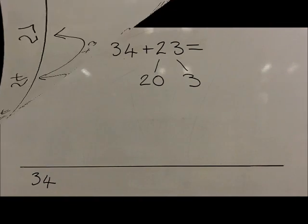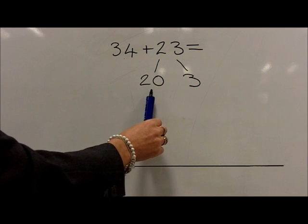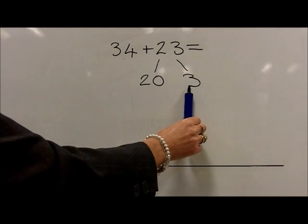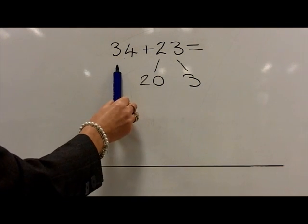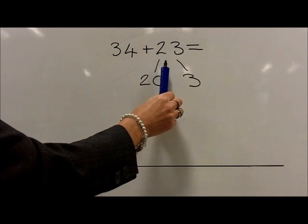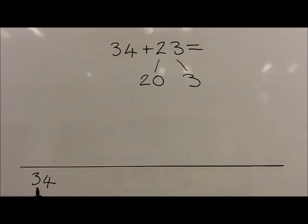This is followed by them adding tens in one jump and the units in one jump. So for this question, 34 plus 23, they still start at the number 34 on the left hand side.